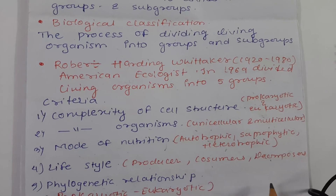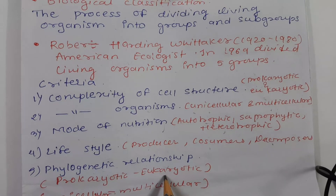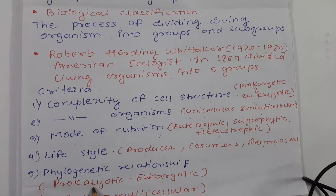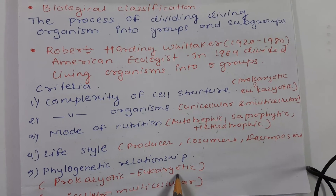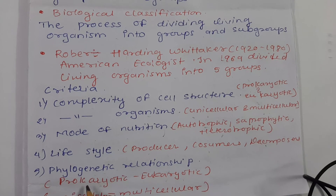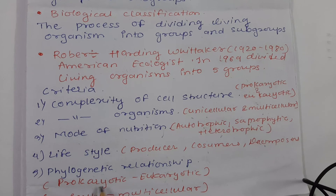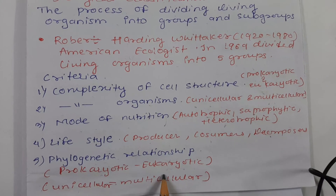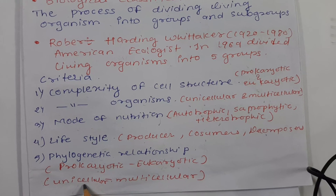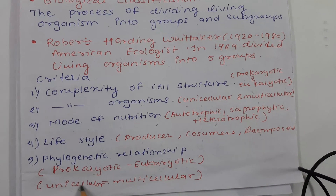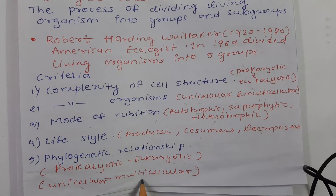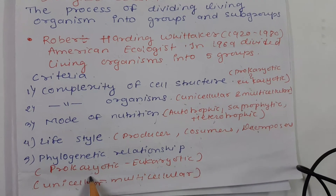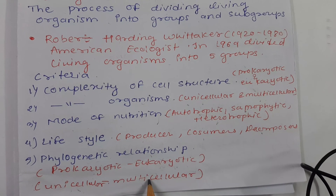The fifth criterion was phylogenetic relationship, which refers to the developmental history of an organism. It means the progression from prokaryotic to eukaryotic cell structure — when an organism is born it possesses prokaryotic cell structure, and after development it becomes eukaryotic. Similarly, an organism may begin as unicellular and become multicellular over time. This developmental progression from prokaryotic to eukaryotic and from unicellular to multicellular is called phylogenetic relationship.